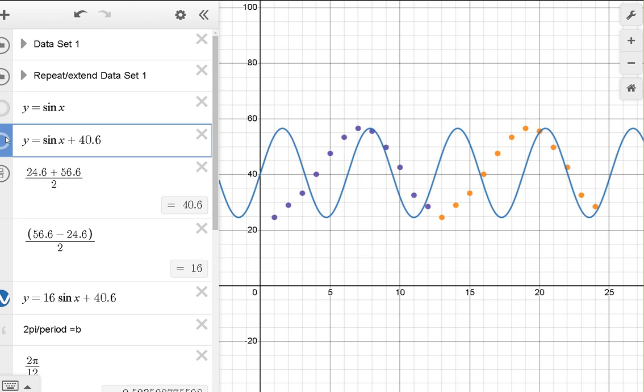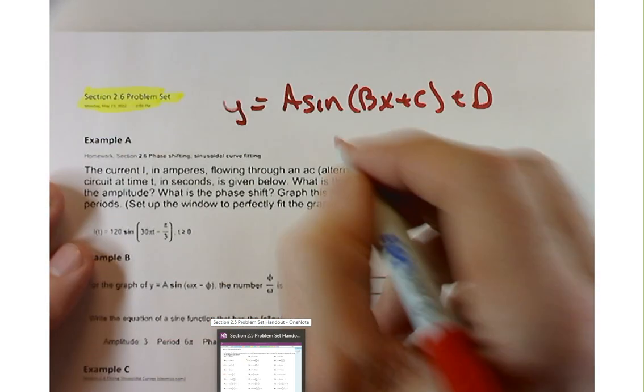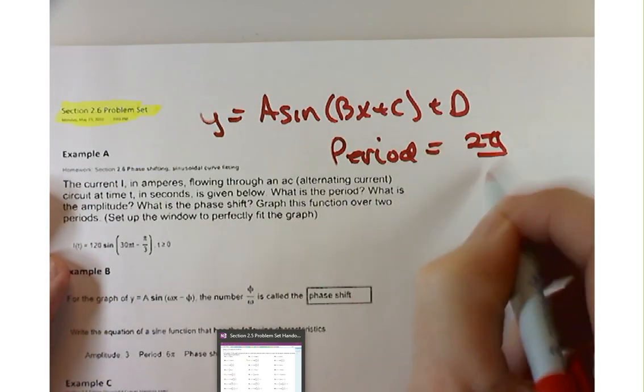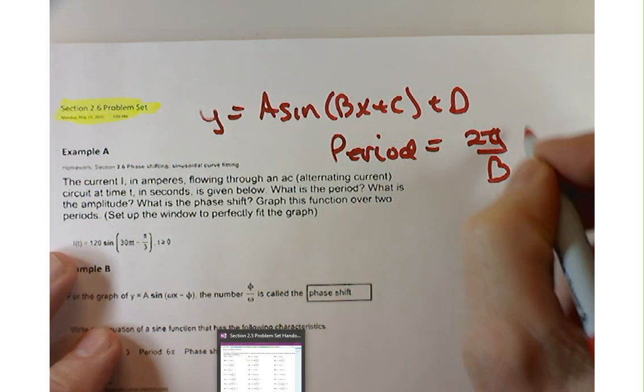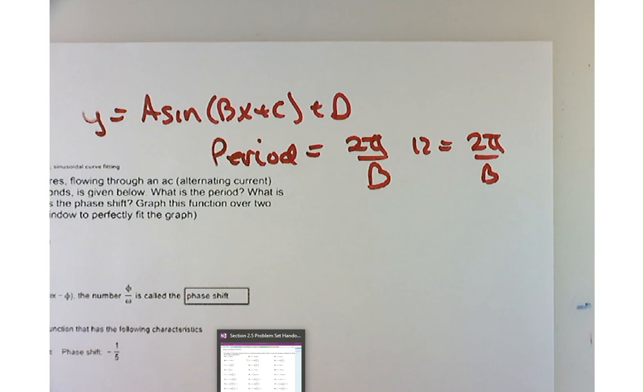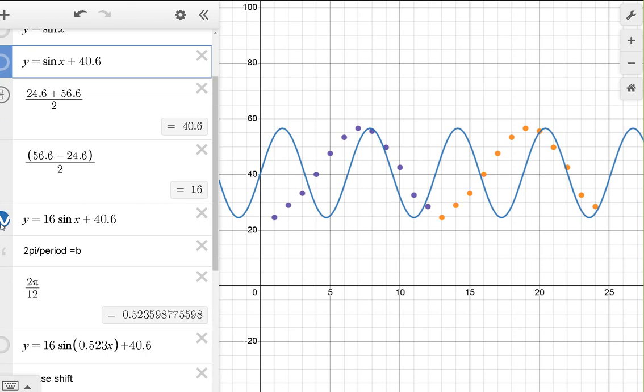Now at least I'm getting in the ballpark of things, getting better. I'm taking these changes one at a time. The next thing I've got to adjust is the period of the graph. You might remember from our work earlier in this course that B affects the period. So the period, do you remember what the period is for this? 2 pi over B.